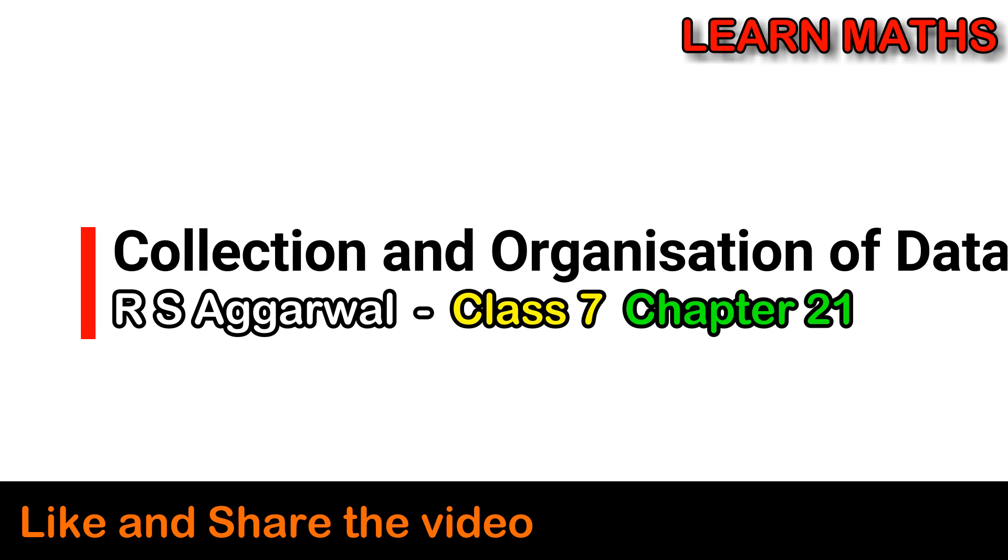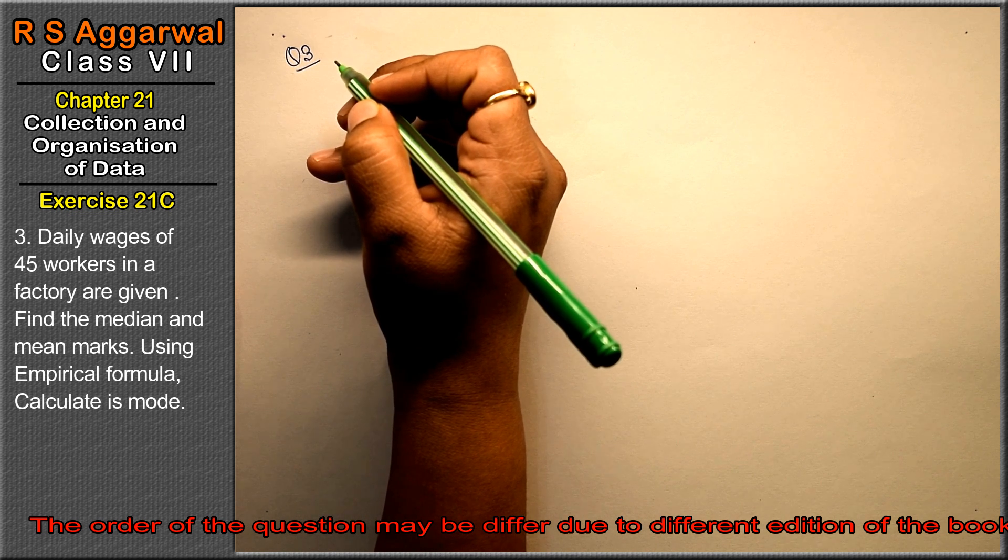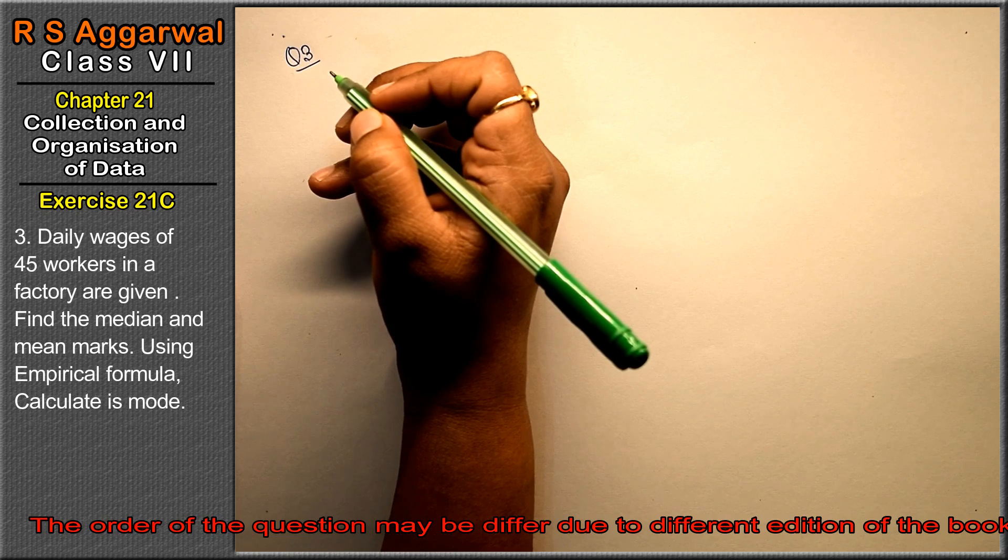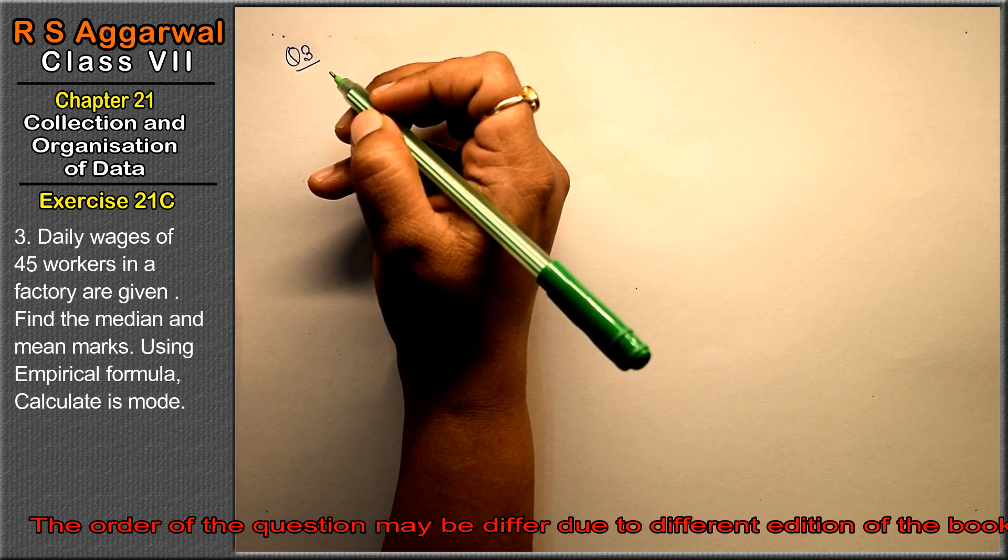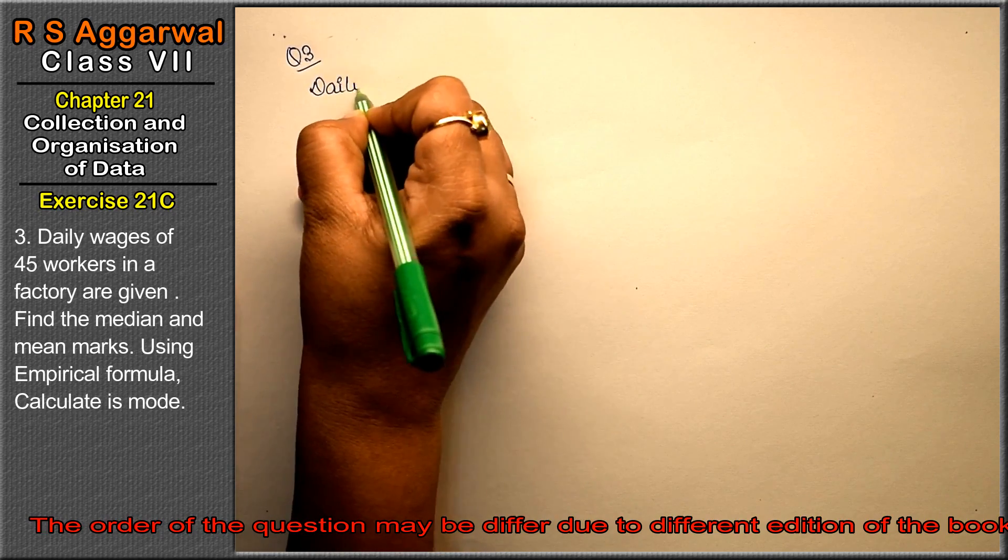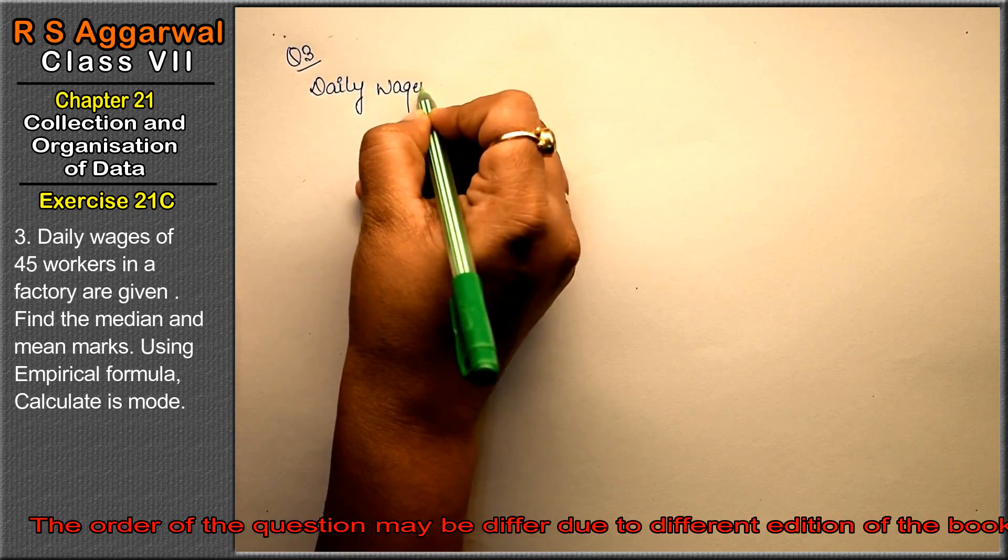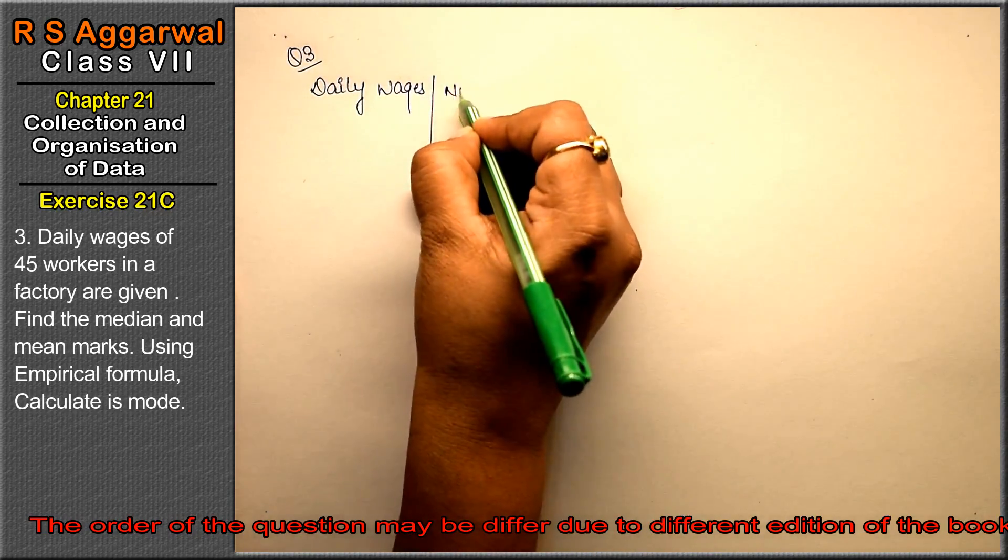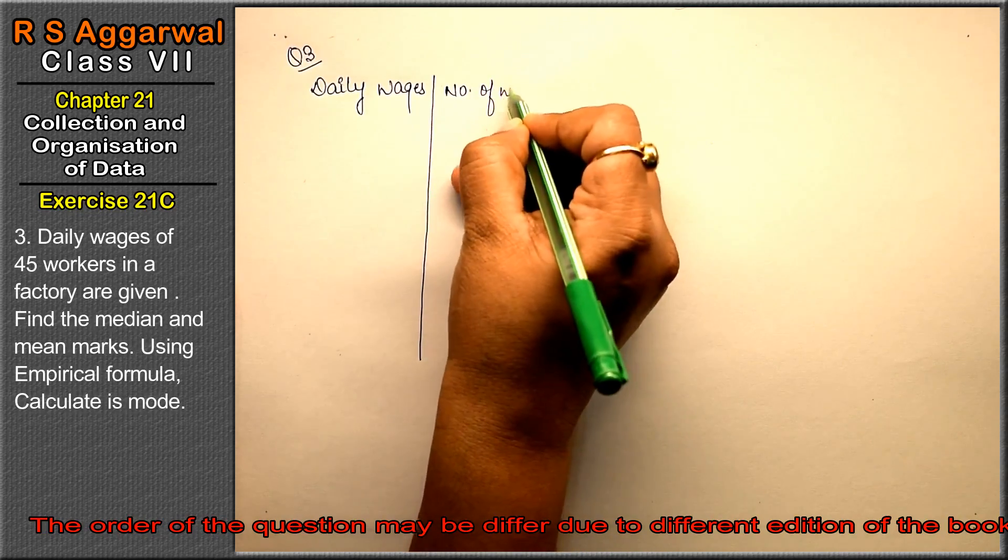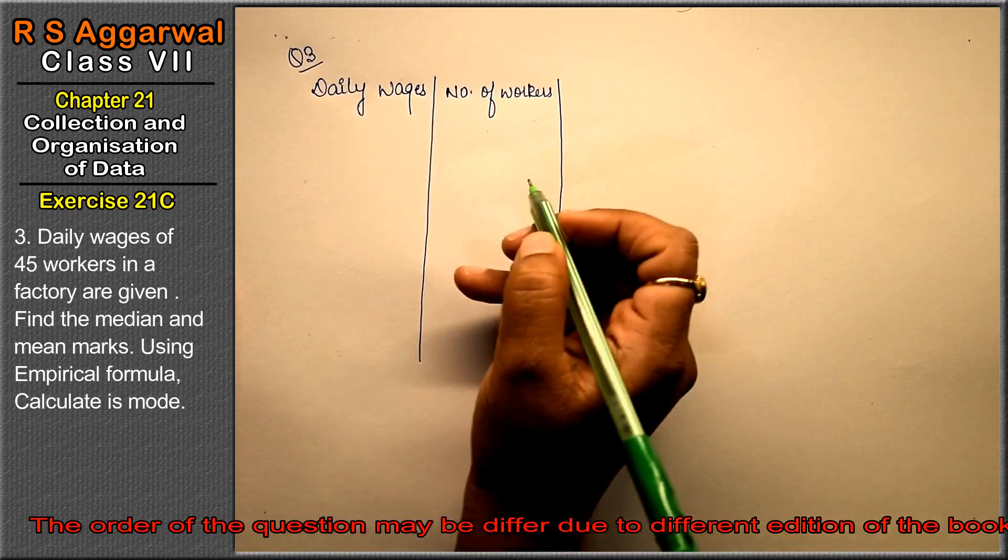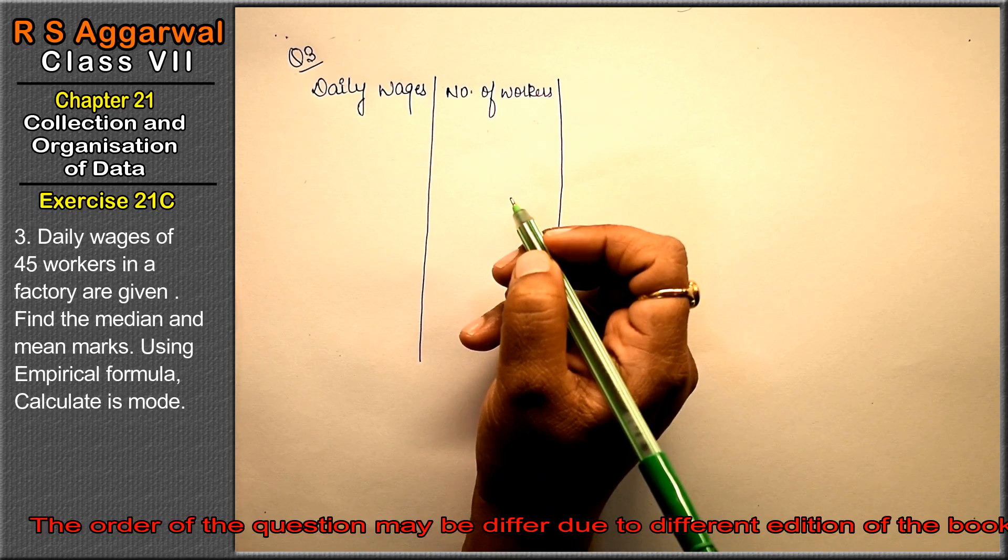Let's do question number three of Exercise 21C, that is Collection and Organization of Data. Question number three is: Daily wages of 45 workers in a factory are given below. Daily wages and number of workers.